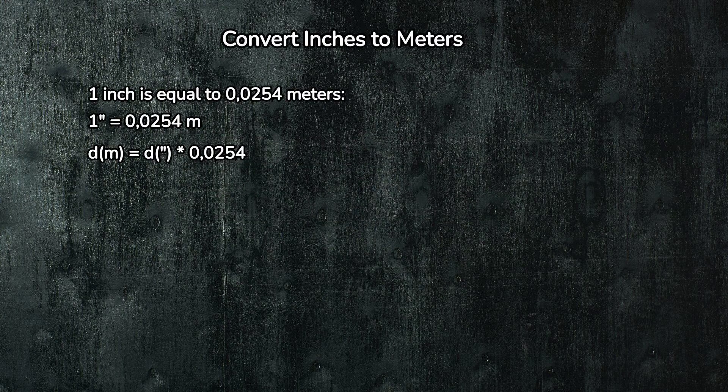First things first, let's understand the basic conversion factor. One inch is equal to 0.0254 meters. This is a fixed value that you can use any time you need to convert inches to meters.